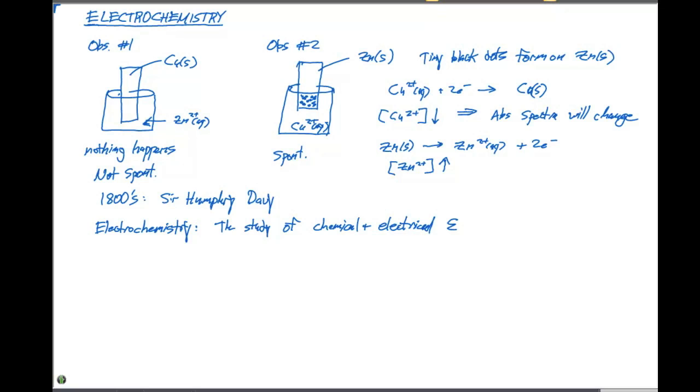Category number one of electrochemistry is the generation of an electric current from a chemical reaction. And these reactions are redox reactions, or oxidation reduction reactions. And they were introduced to us way back in section 4.4 of our textbook.